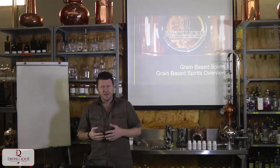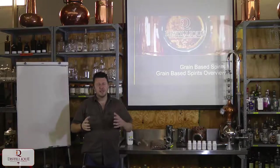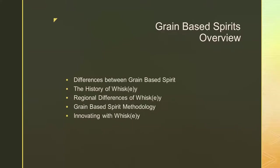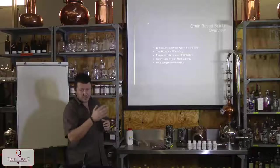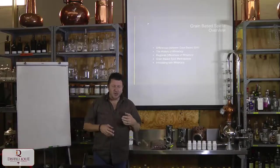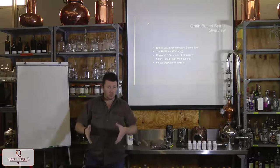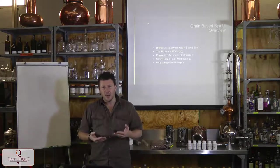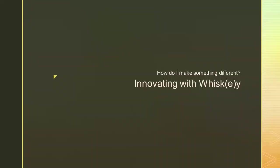Hi guys and welcome to the last lesson, the fifth lesson in our chapter on grain-based spirits overview. In this chapter we've discussed the differences between grain-based spirits, the differences between moonshine, whiskey, and vodka. We've looked at the history of whiskey, regional differences and legislation in different countries, and the grain-based spirit methodology. Now finally we're going to talk about innovating with whiskey — how to make a unique and different whiskey within the law.